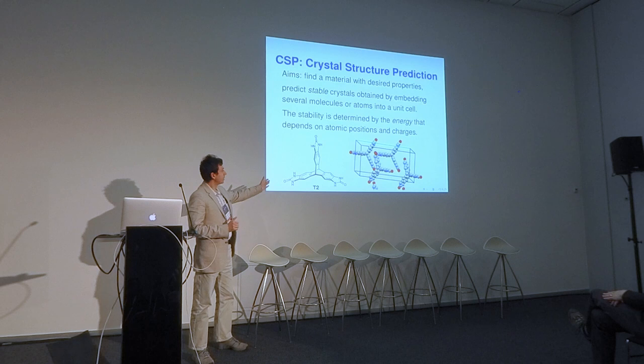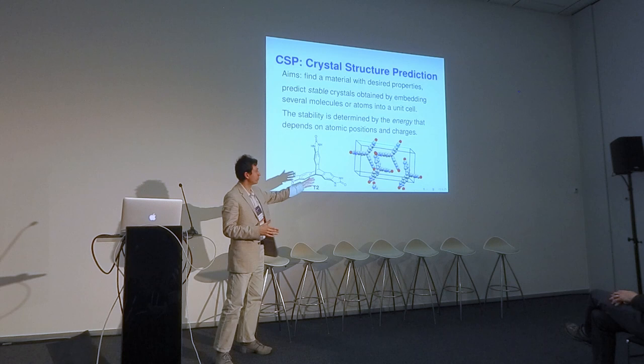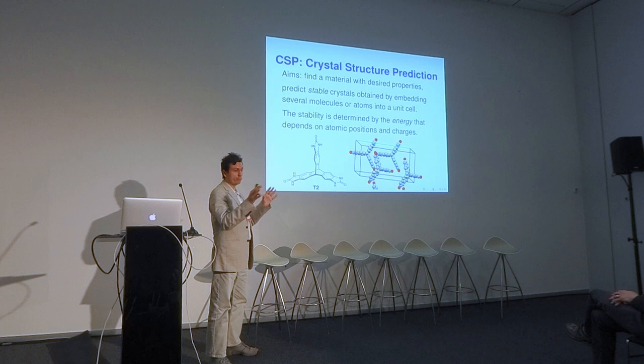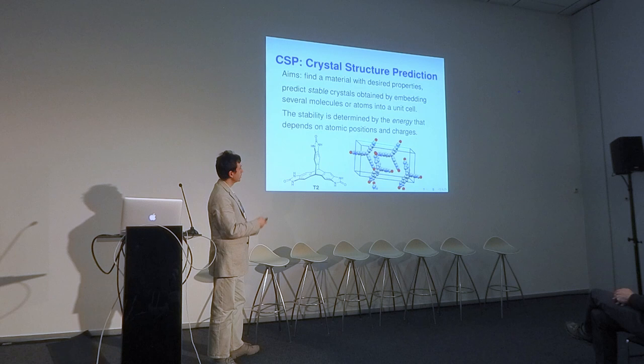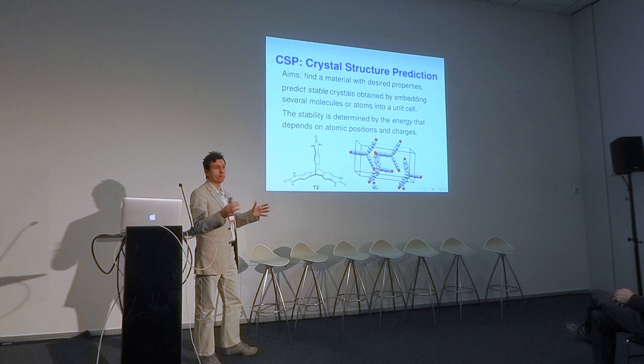One example from collaborators at the Materials Innovation Factory involves a simple molecule called T2. The challenge is to find embeddings of these molecules into an unknown unit cell so that the resulting material is stable. Although these molecules are separate, they form a solid crystal through intermolecular interactions — in this case hydrogen bonds — and because there are many of them, they make the whole material stable.